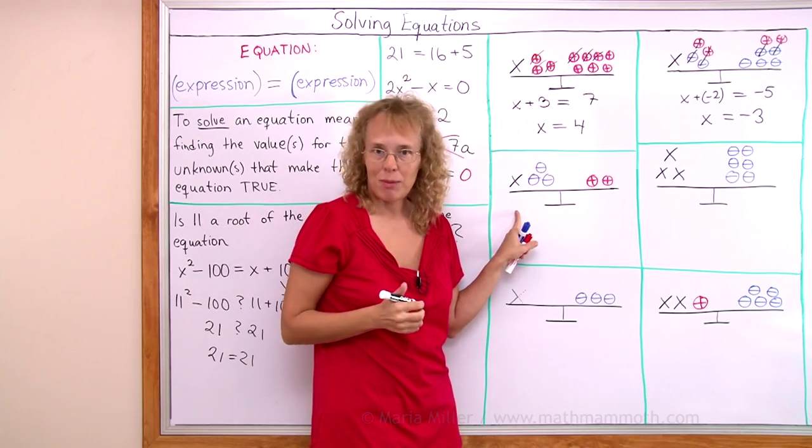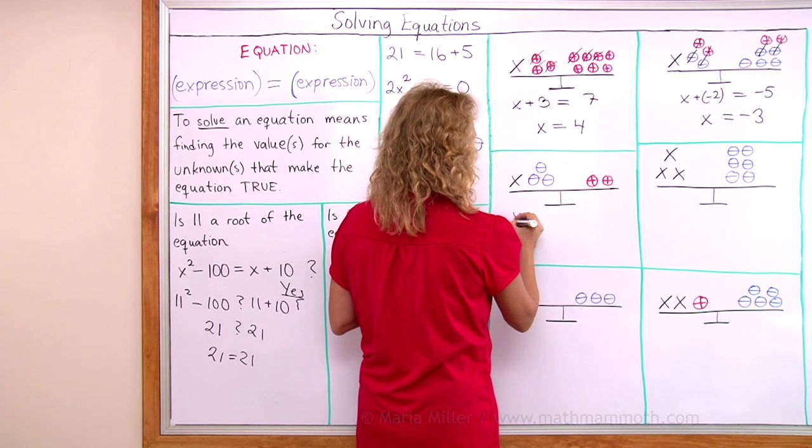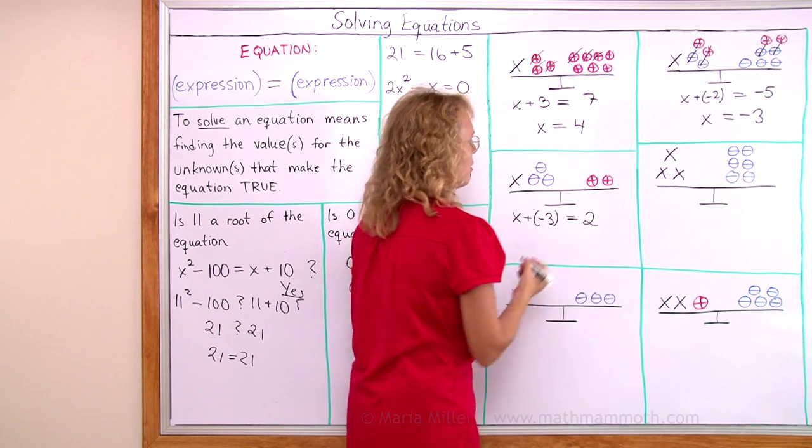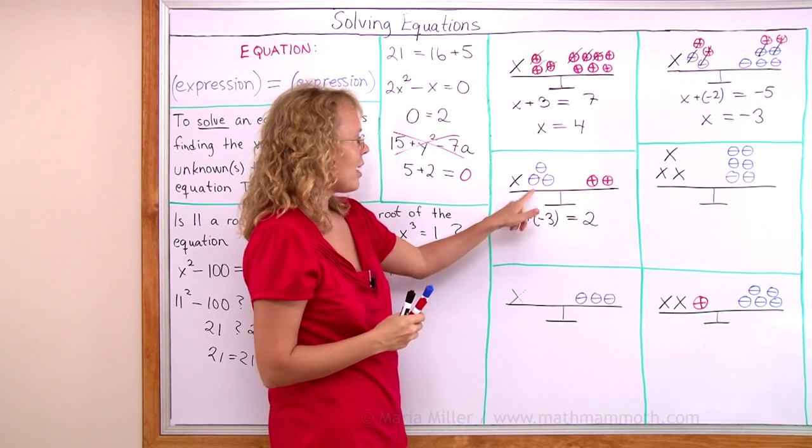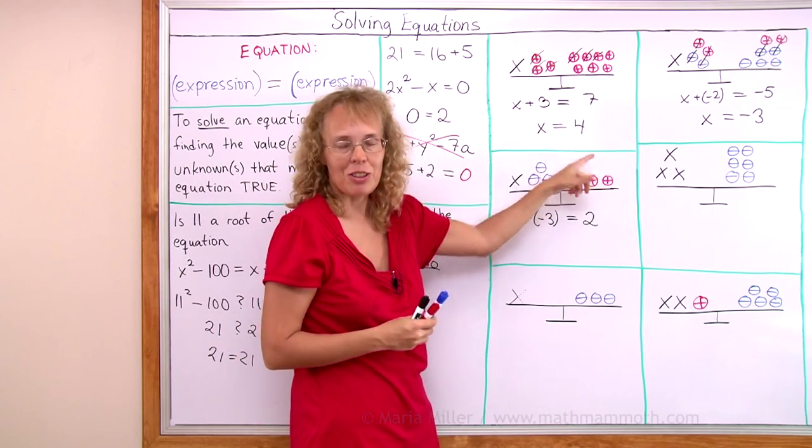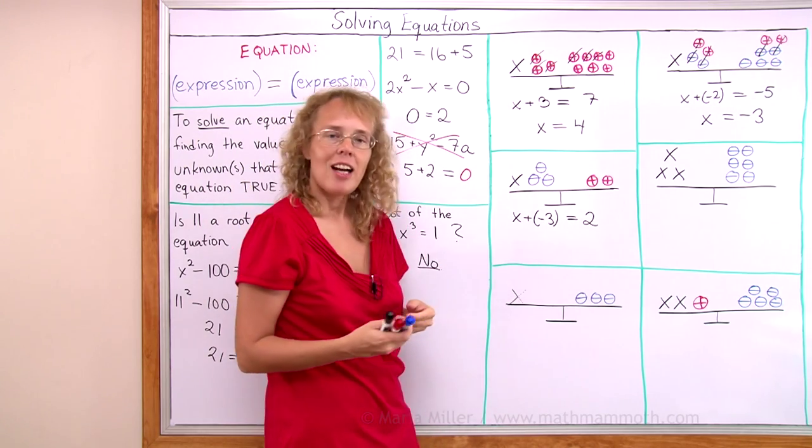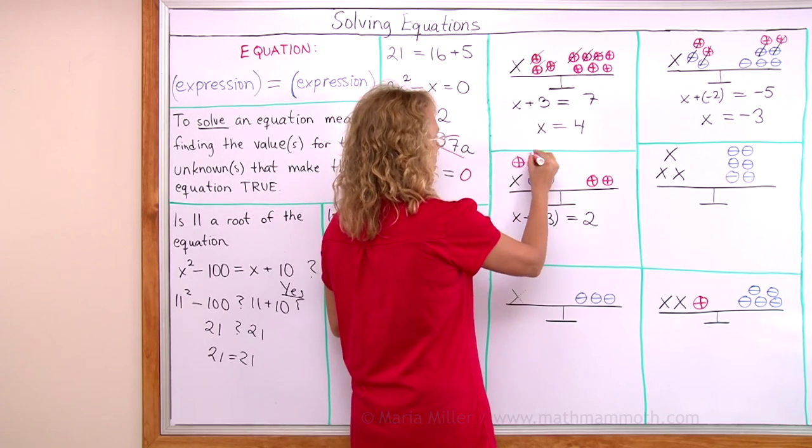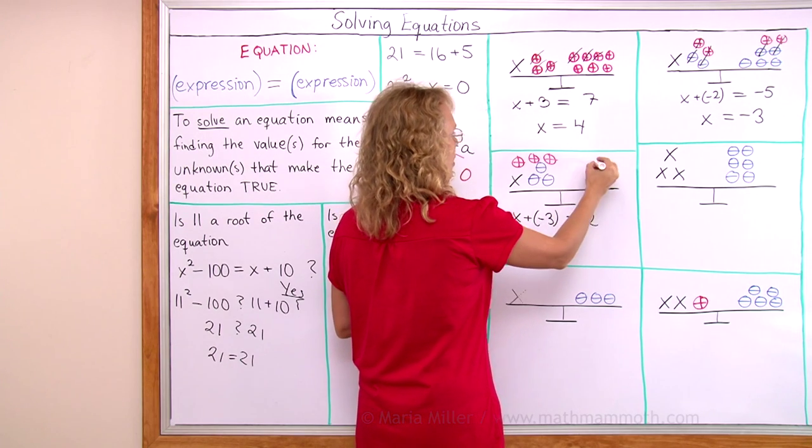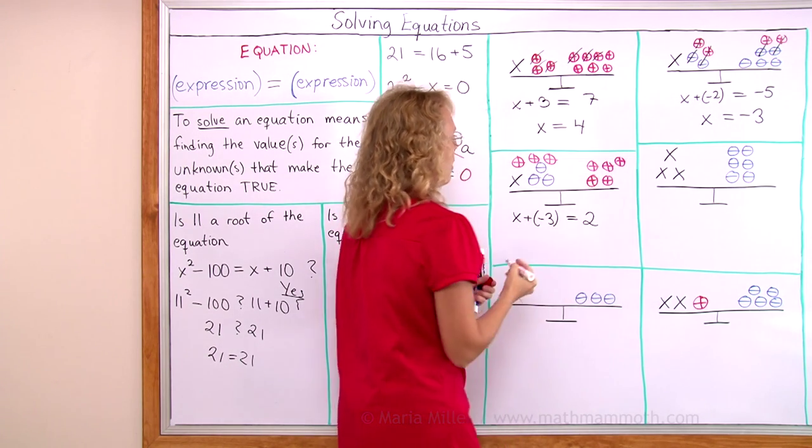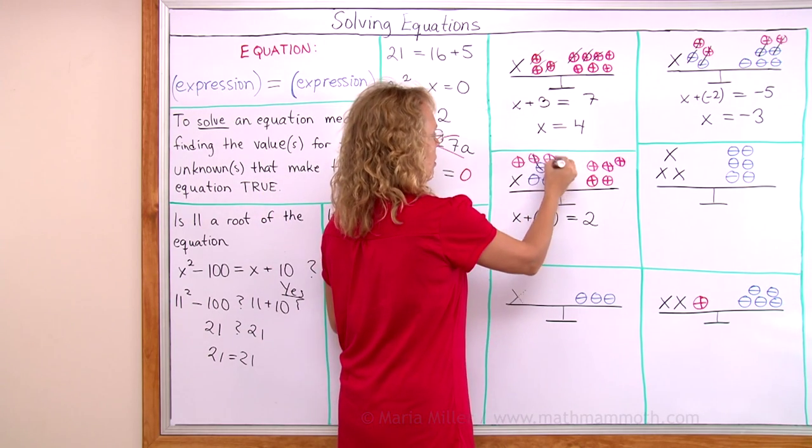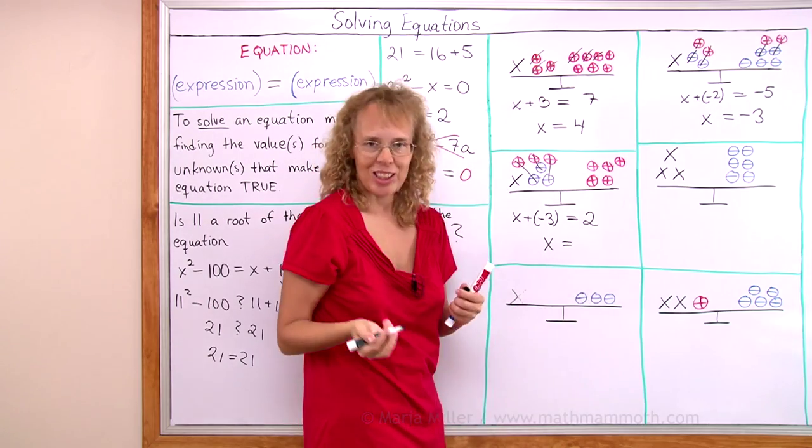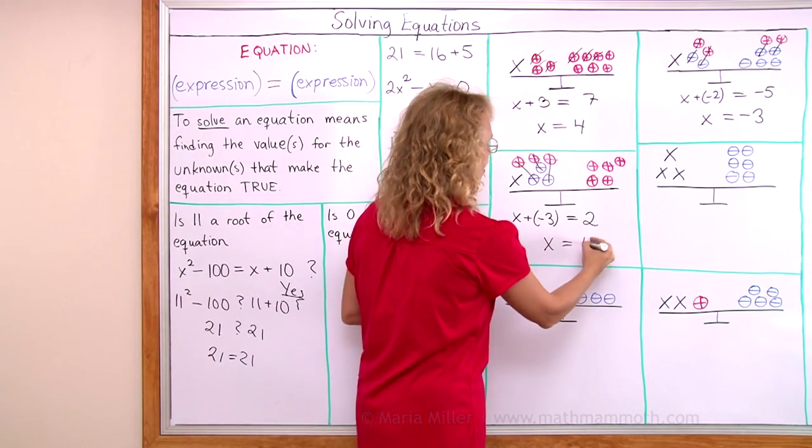And this is where I am going to use the same principle. This equation to start with is x and then added negative three equals positive two. I will now add positive three to this side and to this side too to keep it balanced. But the reason I add positive three is so that all these will get cancelled out. So add three positives and on this side too. And then these will cancel, leaving x alone, which is what we want. We always want to have x alone on one side of the equation. Then here is five.